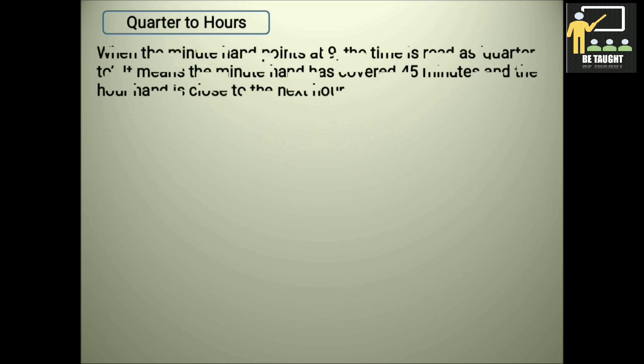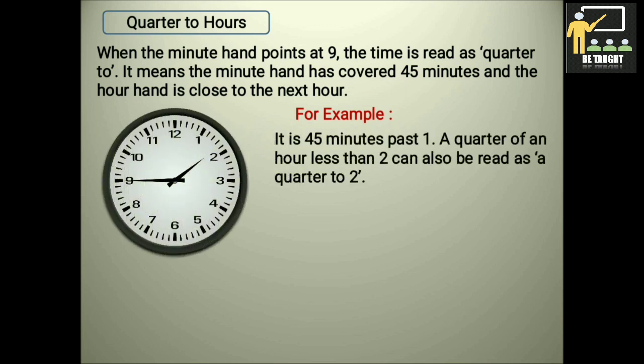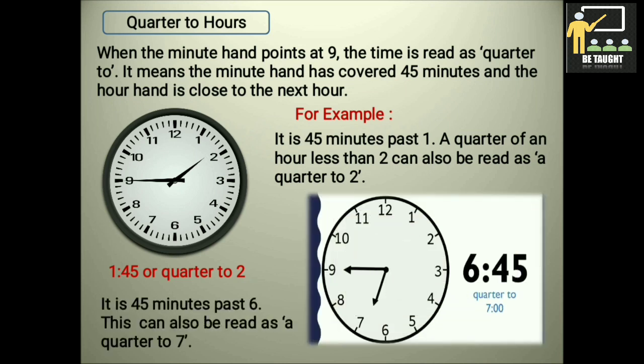Quarter to hours. When the minute hand points at 9, the time is read as quarter to. It means the minute hand has covered 45 minutes and the hour hand is close to the next hour. For example, it is 45 minutes past 1. A quarter of an hour less than 2 can also be read as a quarter to 2, or we can also say it as 1:45. We will see one more example. It is 45 minutes past 6. This can also be read as a quarter to 7 or 6:45.